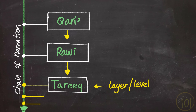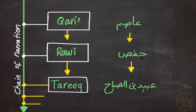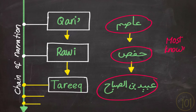The most famous example is that of Hafs an Asim. So Asim is the qari, Hafs is the rawi who received it from Asim, and Ubaidu ibn al-Sabah is a tariq who received the Qur'an from Hafs. Each qira'a, riwaya, or tariq is named after the most famous individual who recited that certain variation and then taught it to his students.